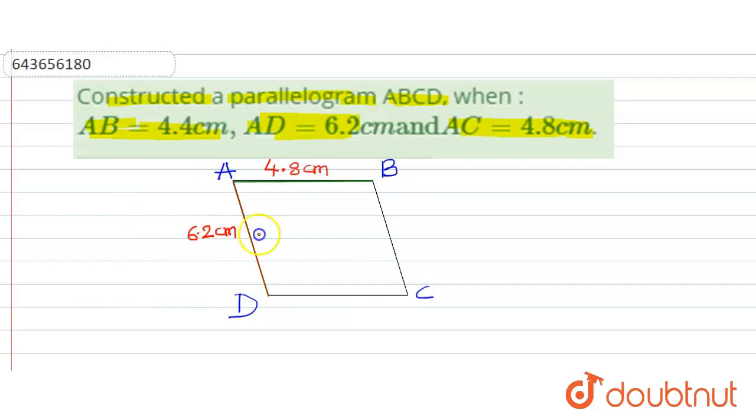Then we have to draw the diagonal AC. The side is 4.8 centimeter. Then we will draw the line BC and the line DC. Hence, the construction of parallelogram is completed.